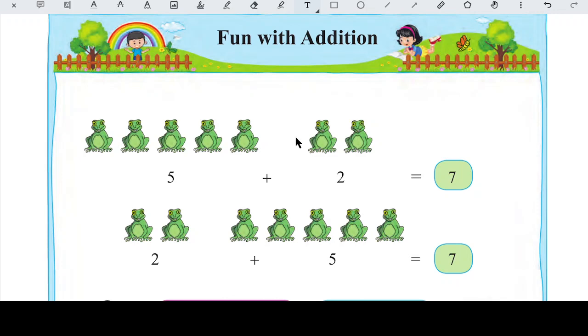To aap dono ke paas 2-2 chapati hai, lekin agar woh 2-2, jaise agar aapke paas 2 hai, aapke bhai ke paas 2 hai, to jab woh dono ko matlab 2-2 ko aap mila denge to kitni ho jayegi? Woh total, woh ho jayegi 4, because 2 plus 2 is 4, hai na? 2, 3, 4. So isse kehte hain addition, isse kehte hain sum. Sum ya phir addition. So angels, today we are going to learn about addition, so let's get started.